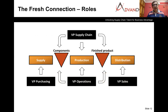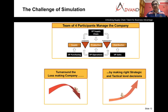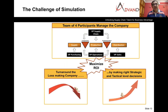If doing a full-fledged simulation, it is a team activity. Each team has four roles representing the management team: VP Sales, Operations, Purchasing, and Supply Chain. VP Sales is responsible for demand management; Operations for capacity management of the manufacturing line, inbound, and outbound warehouses; Purchasing for supplier management; and VP Supply Chain for inventory management of raw materials and finished products as well as production planning. The ultimate objective of the simulation is to maximize the ROI of the company.